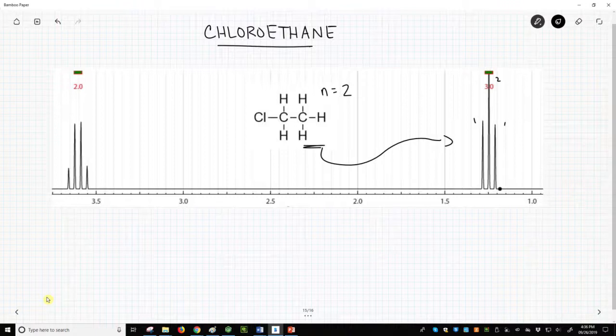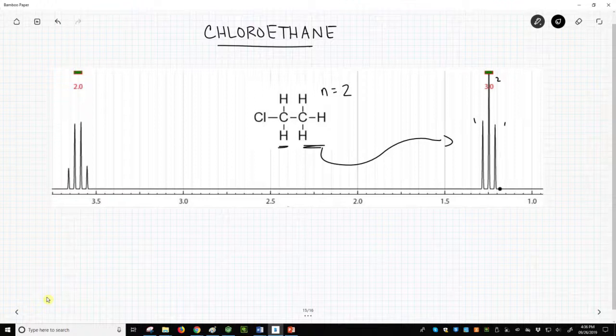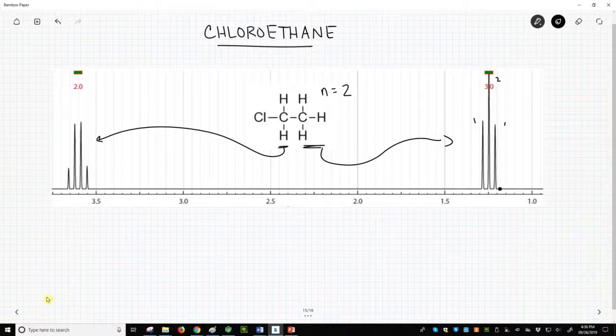Furthermore, we have a CH2 group. The CH2 hydrogens have three neighboring hydrogens. N equals 3. Multiplicity is 4. A quartet with four lines. Relative ratio of 1 to 3 to 3 to 1.